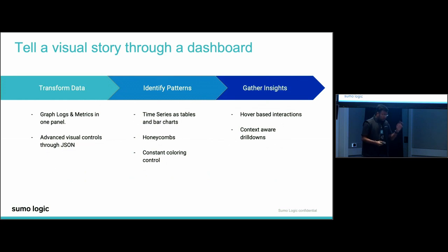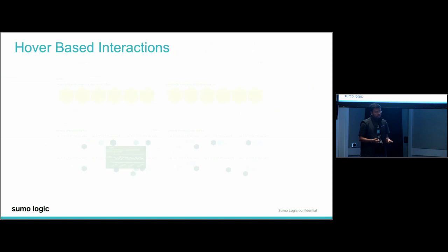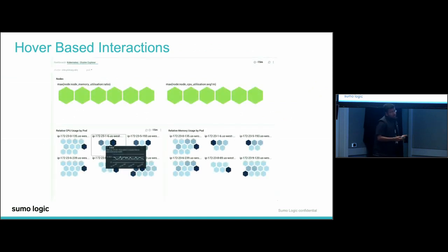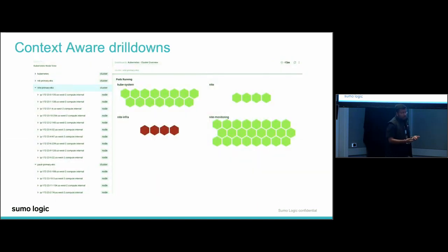We've solved the 'what' problem—you created panels and helped your colleague identify what was wrong. Next, we want to show the 'why' part: gathering more insights. That something went wrong? Let's see why. Hover-based interactions: many times aggregations don't tell you the true story—there might be a red indicator caused by a spike way above the time range. Just hover over it to get the underlying time series in the tooltip to validate your thought and hypothesis.